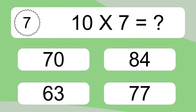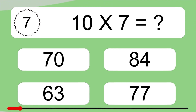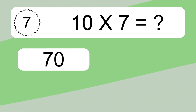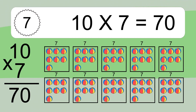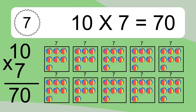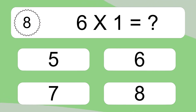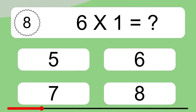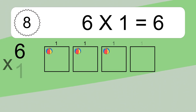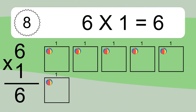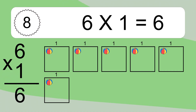Ten times seven equals what? Ten times seven equals seventy. We have ten boxes, and each box has seven colorful balls inside. If you count all the balls in all the boxes together, you will have ten times seven balls. This equals seventy balls. Six times one equals what? Six times one equals six. We have six boxes, and each box has one colorful ball inside. If you count all the balls together, you will have six times one balls. This equals six balls.